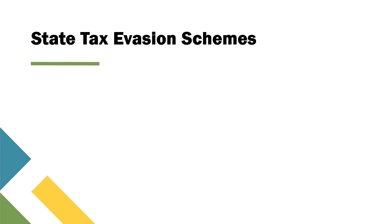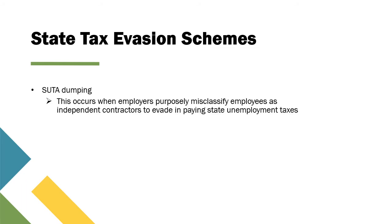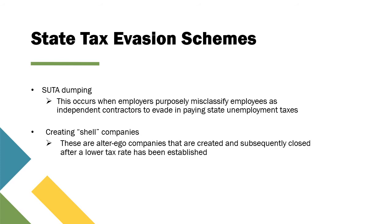There are state tax evasion schemes employers have tried to use to avoid paying state unemployment tax. The first is pseudo-dumping, which occurs when employers purposely misclassify employees as independent contractors to evade state unemployment taxes. The second is creating shell companies — alter-ego companies that are created and subsequently closed after a lower tax rate has been established.